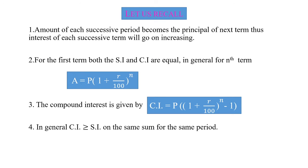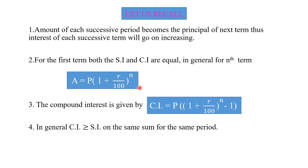Let us recall first. In the last lecture, we discussed that the amount of each successive period becomes the principal of the next term. Thus, the interest of each successive term will go on increasing. For the first term, both simple interest and compound interest are equal. In general, for n terms, A is equal to P times (1 plus r divided by 100) raised to n. The compound interest formula is: CI equals P times [(1 plus r/100) raised to n minus 1]. In general, compound interest is greater than or equal to simple interest on the same sum for the same period. Both formulas are very important.